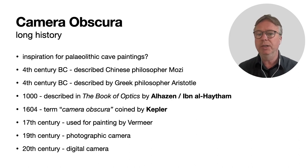It was described in detail in the Book of Optics by Alhazen, or Ibn al-Haytham, the Arab scholar. He's one of the giants of the history of vision science. Six centuries later, the term itself, camera obscura, was coined by Kepler. In the centuries after that, for example in the 17th century, a camera obscura with a lens was used by Vermeer to create his paintings, and then later that turned into the photographic camera in the 19th century, and then the digital camera that we're using now in the 20th century. Quite a long history of this concept.